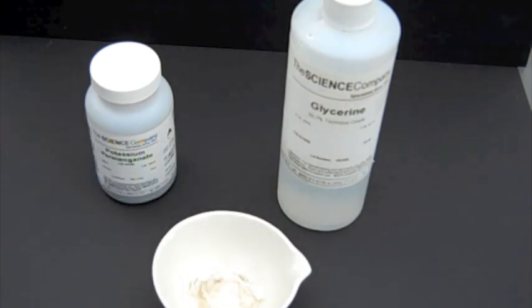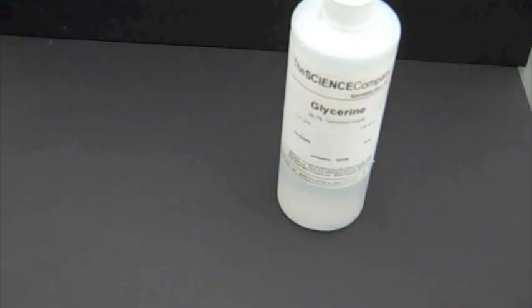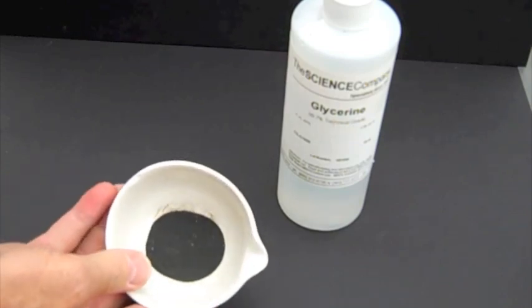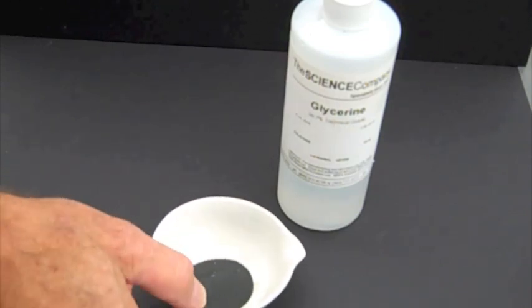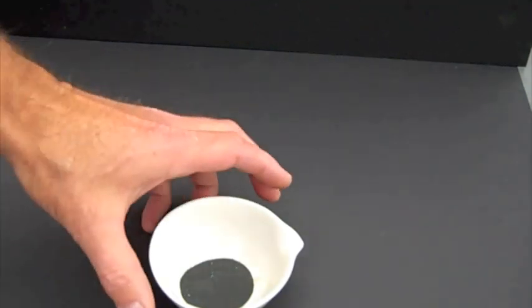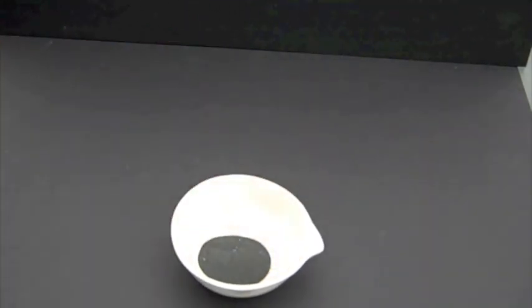start by pouring a small amount of permanganate into the dish. There it is, just enough to cover the bottom a little bit. And the next step, we'll drizzle a little bit of the glycerin onto it.